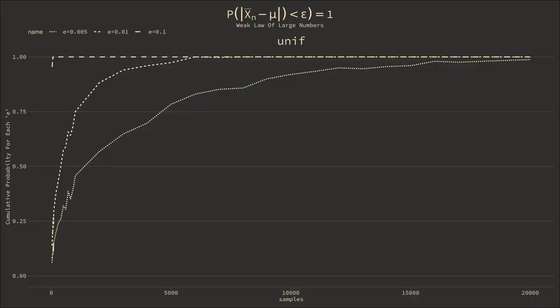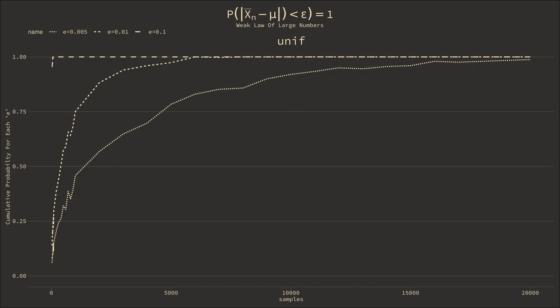For the uniform distribution, here are plots of different thresholds. It is clear that for some of these thresholds, the probability is going to be 1. As the threshold gets smaller, more samples are needed to have the assurance that the sample mean will meet the population mean.